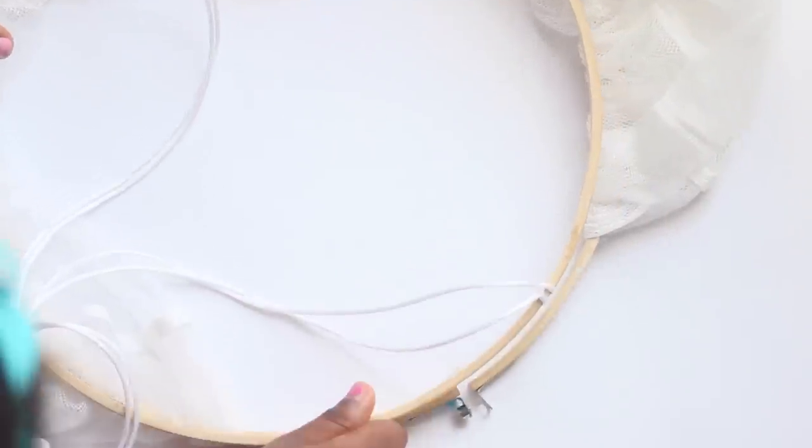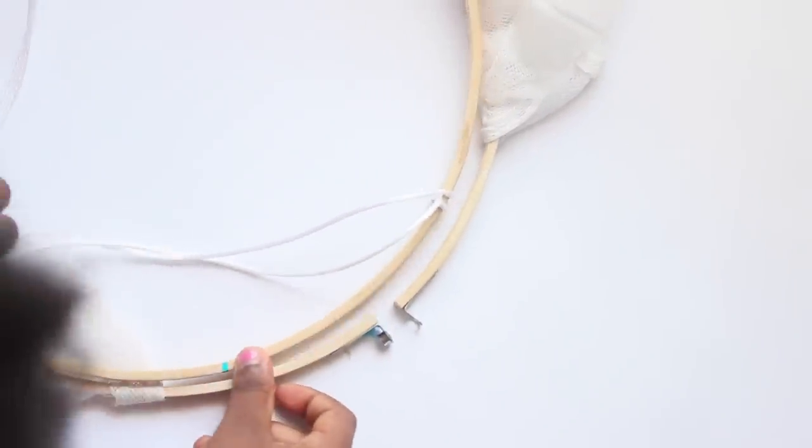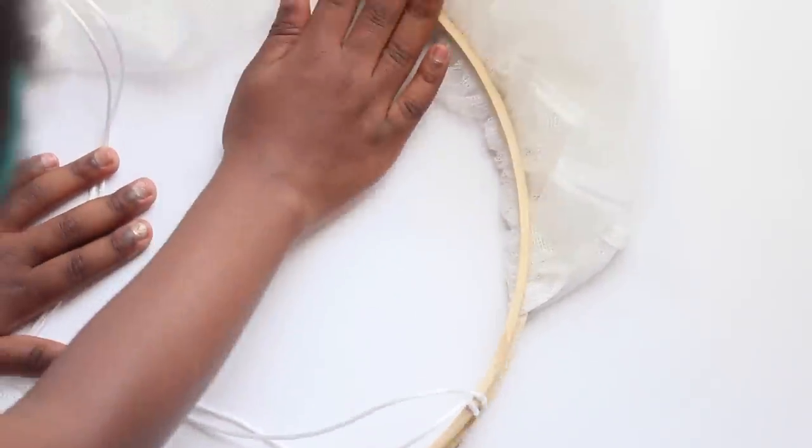And once you've tied your three loop knots you'll connect them at the top with a knot. Insert the inner ring back into the outer ring and screw it back together.